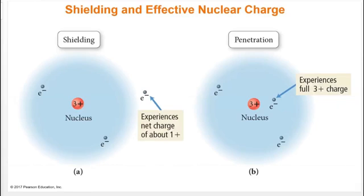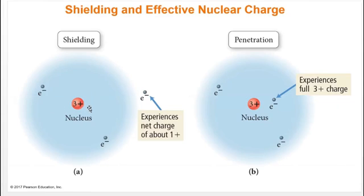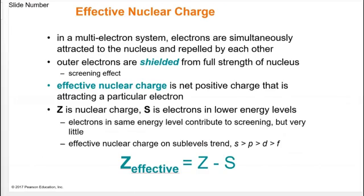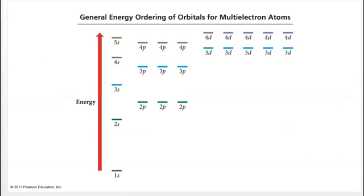We also have effective nuclear charge, which basically means: if you were in an electron's position, what charge would you see looking into the nucleus? For example, if we are the electron on the left-hand side, the electrons below us are moving extremely fast, forming a cloud around the nucleus, so the charge we see is +3 protons minus 2 shielding electrons, giving an effective nuclear charge of +1. This can be quantified as Z_eff = Z minus S, where Z is the atomic number and S is the number of shielding electrons in lower energy levels.